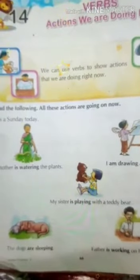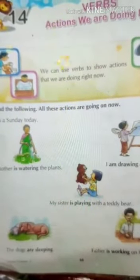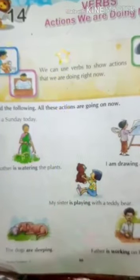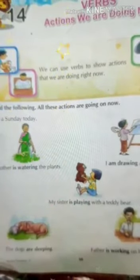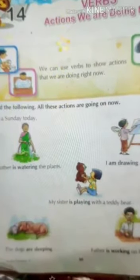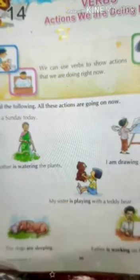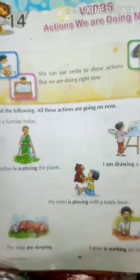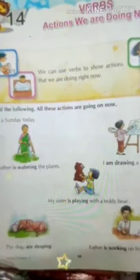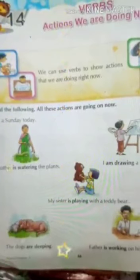See children, it is a Sunday today. Mother is watering the plant — you can see the bold letter 'is watering the plant.' I am drawing a picture. My sister is playing with a teddy bear. The dogs are sleeping. Father is working on his computer. These all are actions going on now.